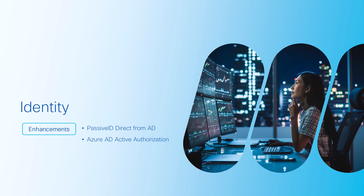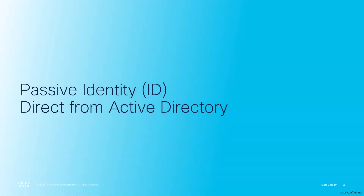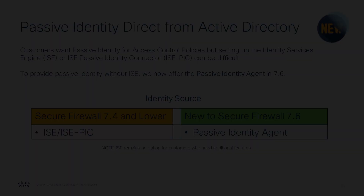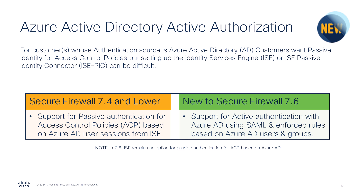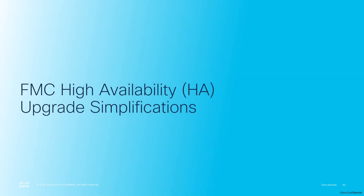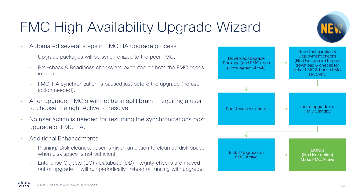Approaching the back half of the presentation, we arrive at identity, which has two notable updates. The first being the new passive identity agent. The passive identity agent provides passive identity without the need of Cisco's Identity Services Engine. And the second is support for active authentication using SAML-based identity providers, including Azure, Google, and Okta. Please note that ISE still remains an option for customers who need additional features. And now we've reached management and upgrade improvements. For 7.6, we have two major enhancements. The first is the creation of the new FMC High Availability Upgrade Wizard that reduces the number of steps and clicks required to perform an upgrade by 50% through various automations. Additionally, with improved HA validations for an FTD upgrade, failure rates have been cut by up to 70%.